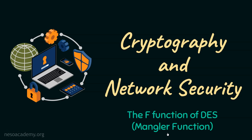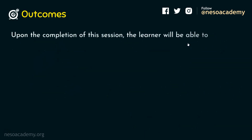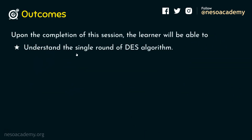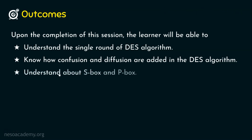As usual, let's start the session with the outcomes. Upon the completion of the session, the learner will be able to: Outcome one, understand the single round of DES algorithm. Outcome two, know how confusion and diffusion are added in the DES algorithm. And outcome three, understand about the substitution box and the permutation box.